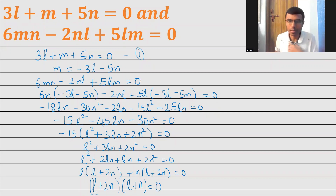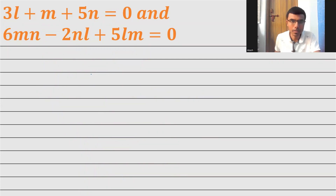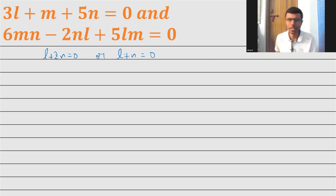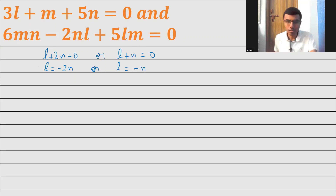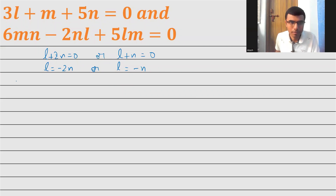Now I have two cases. Either L plus 2N equal to 0 or L plus N equal to 0. So either L equal to minus 2N, or L equal to minus N. Case 1: L equal to minus N.